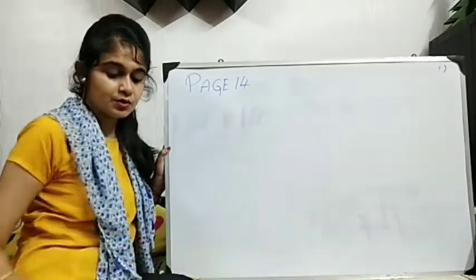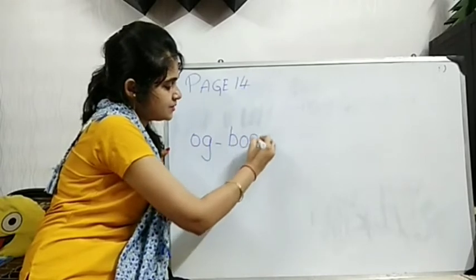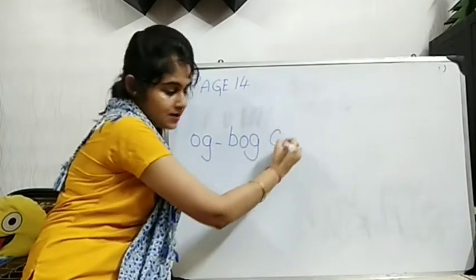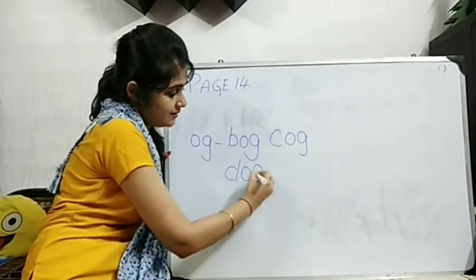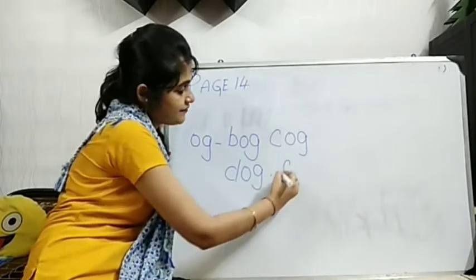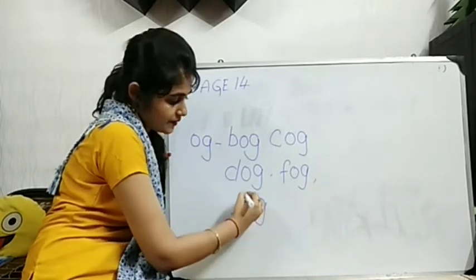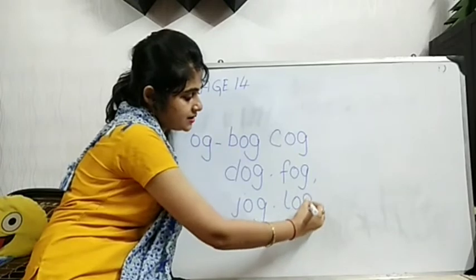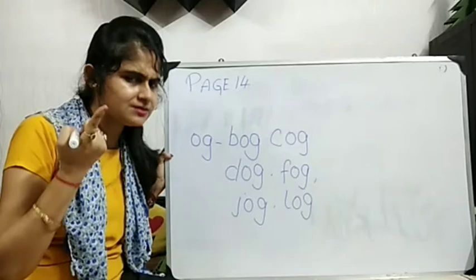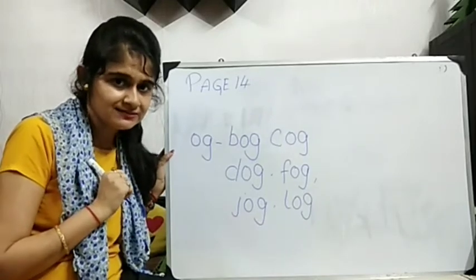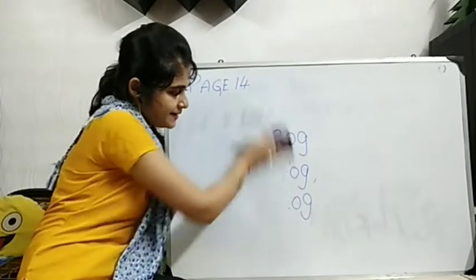Next one. This is done. Next we will do O-G. That is also very easy. B-O-G, Bog. C-O-G, Cog. D-O-G, Dog. F-O-G, Fog. J-O-G, Jog. L-O-G, Log. All of you are repeating after me or not? I cannot hear. Few people are repeating, no? Yes. Next. O-G done. Say bye-bye to O-G words. Bye-bye.